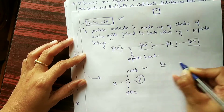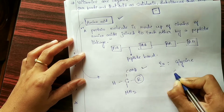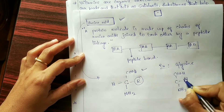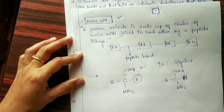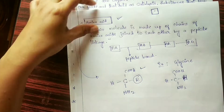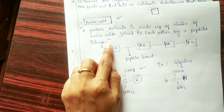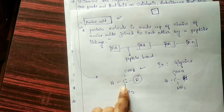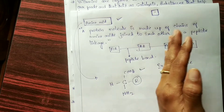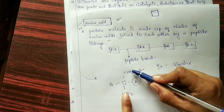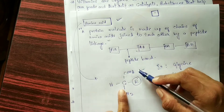As an example of an amino acid, let's take glycine. Proteins are made up of a chain of amino acids joined by a peptide bond — one amino group of one amino acid is linked to the carboxylic group of another amino acid. That is how they are joined.